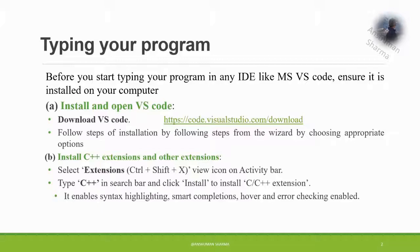Before compiling and running a program, you need to first type your program. To start typing, you need an IDE. You need to install VS Code — it is not available by default and you can install it by downloading it from its website, following the steps of the installation wizard and choosing the appropriate options. Once it is installed, you can type your code.